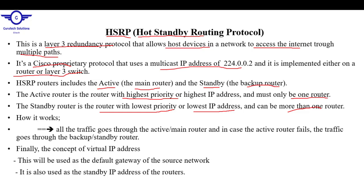How does HSRP work? All traffic goes through the Active or main router. In case the Active Router fails, let's say we have router one, router two, and router three, connected through a switch, with computers on each side.